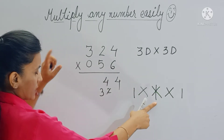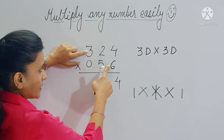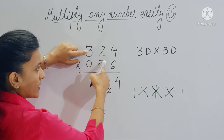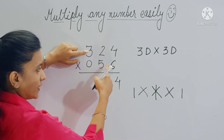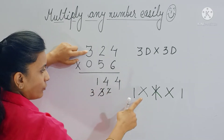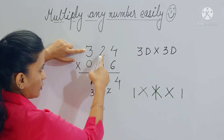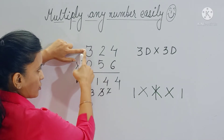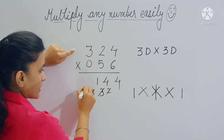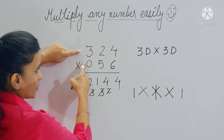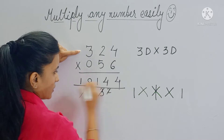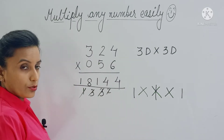Step three is star: three sixes are eighteen, this becomes zero, and two fives are ten; ten plus eighteen is twenty-eight, twenty-eight plus three is thirty-one. Step four is cross: three fives are fifteen, this is zero, so fifteen plus three is eighteen. The last step: three zeros are zero, so you write this down. This is your answer.